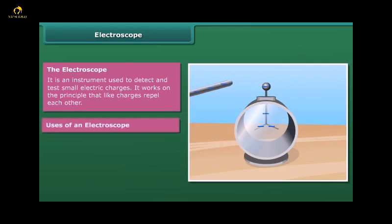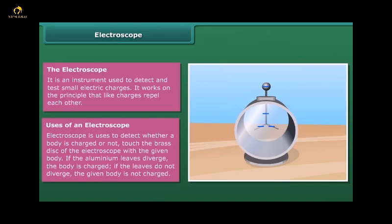Uses of an electroscope: Electroscope is used to detect whether a body is charged or not. Touch the brass disc of the electroscope with the given body. If the aluminum leaves diverge, the body is charged. If the leaves do not diverge, the given body is not charged.